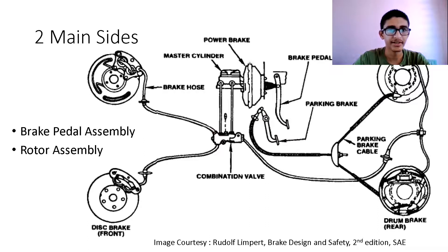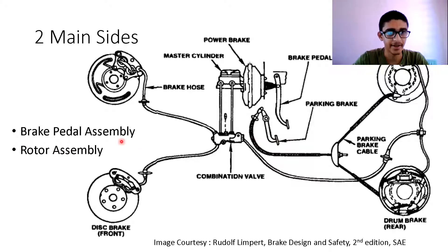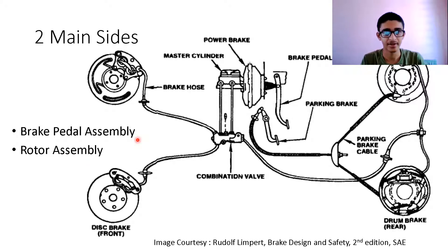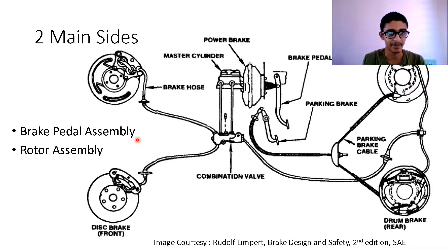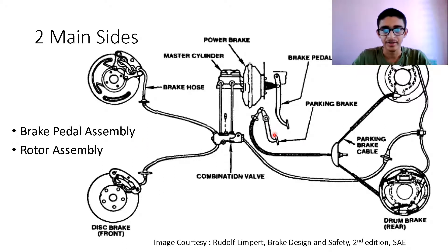There are two main sides in any braking system for an automobile. The first main side is the brake pedal assembly and the other side is the rotor assembly. The brake pedal assembly covers everything close to the driver that the driver operates. The other part of the brake is at the tires or wheels, and whatever assembly is needed there is called the rotor assembly.